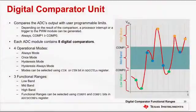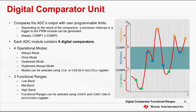The ADC module also consists of eight digital comparators that can be used to compare the ADC module's output with user-programmable limits. Depending on the result of the comparison, a processor interrupt or a trigger to the PWM module can be generated. It can be used in applications where the sample value needs to be compared against a predefined value without requiring CPU intervention. If the sample value meets the comparison criterion, a trigger can be asserted, which reduces CPU overhead.